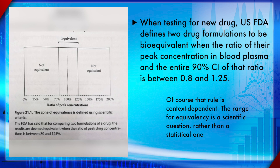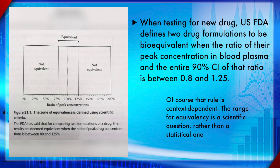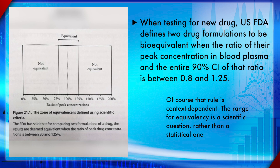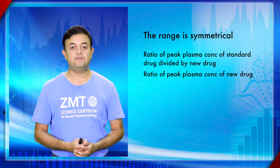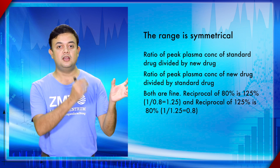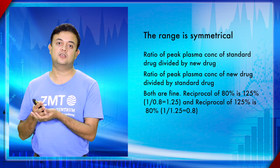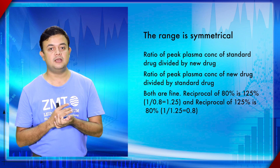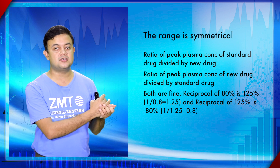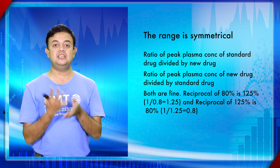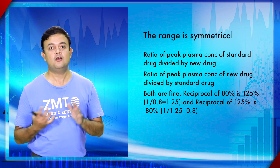The range for equivalency is a scientific question, not a statistical question, and depends on the context. The range is also symmetrical: the ratio of the peak plasma concentration of the standard drug divided by the new drug, or vice versa. That is why it fluctuates between 80% and 125% — the reciprocal of each other.